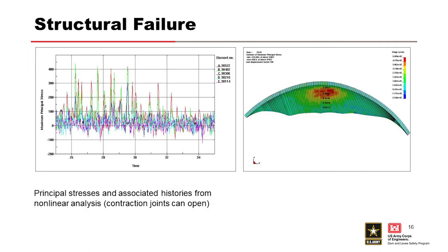Here are more examples of potential outputs. One identifies an area of high stress within the center of an arch dam where tensile capacity may have been exceeded. Another figure shows a time history stress plot identifying how tensile stresses at a particular location vary throughout the event. You can use these time history plots to compare to capacity and determine whether capacity was exceeded, how many times, and for what duration — helping identify not only the potential for initiating cracking but also whether that cracking could propagate all the way through the dam.